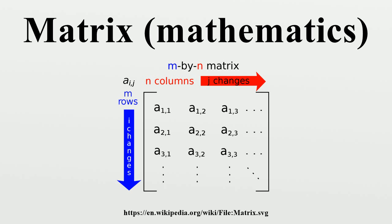A major application of matrices is to represent linear transformations — that is, generalizations of linear functions such as f equals 4x. For example, the rotation of vectors in three-dimensional space is a linear transformation which can be represented by a rotation matrix R. If V is a column vector describing the position of a point in space, the product RV is a column vector describing the position of that point after a rotation.